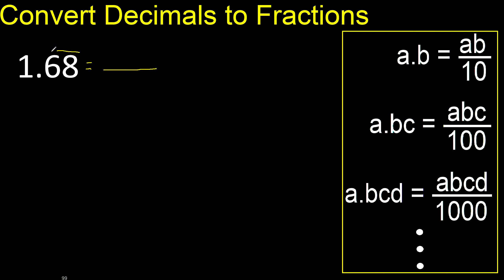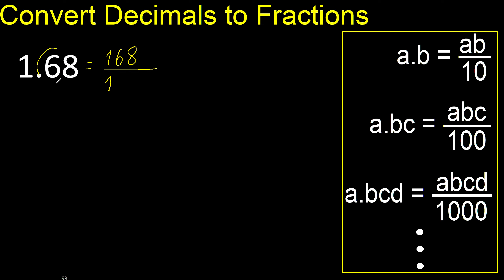First, all the number without point — here always number 1. After the point there are 2 numbers, therefore 2 zeros.